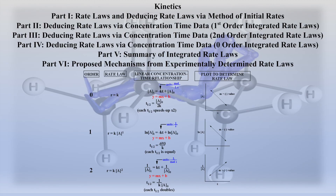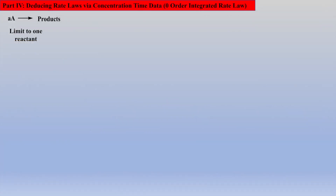Welcome to Part 4 of Kinetics Review. This material will focus on deducing a zero-order rate law given concentration-time data. It is worth mentioning that the student should have first viewed Parts 1 through 3 of this review to gain more from this and subsequent sections. In this introductory video, we will again examine reactions with only one reactant; otherwise, pseudo-order techniques need to be introduced, and they will not be discussed here.